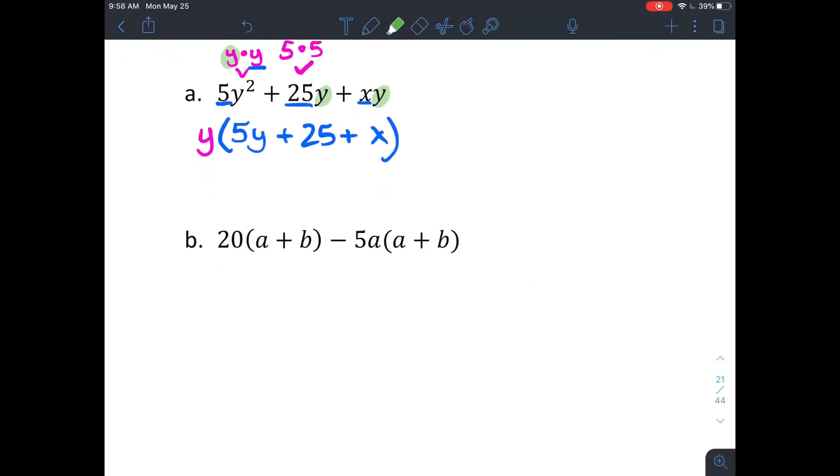If you look at this one, the two terms that are being subtracted actually share a common factor of an entire group of a plus b. So I'm gonna factor that out, which would leave you with 20 minus 5a.